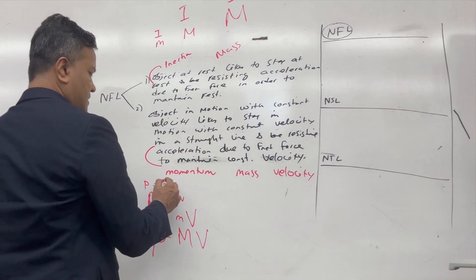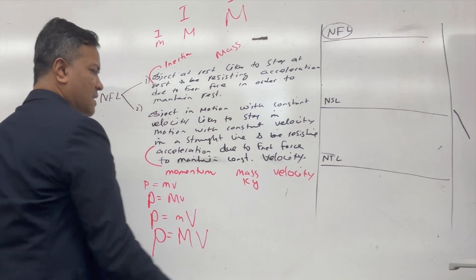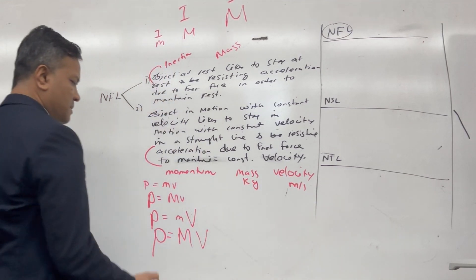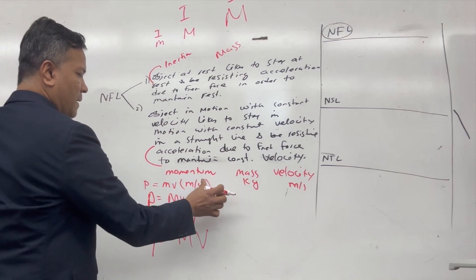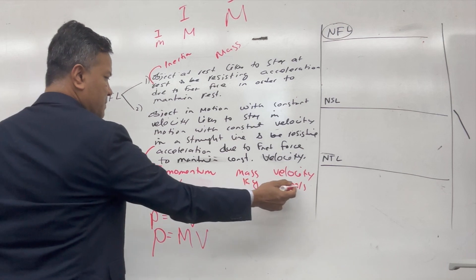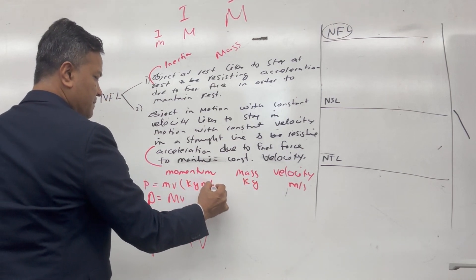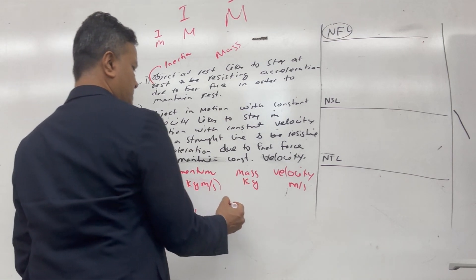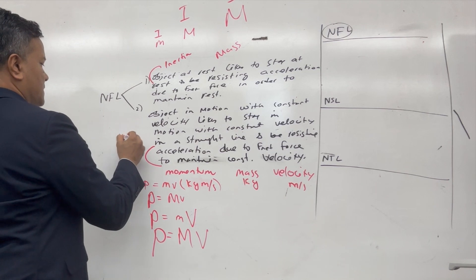Momentum has a unit. Mass has a unit of kilogram, velocity has a unit of meter per second. Therefore, momentum's unit is kilogram meter per second. Momentum is a vector quantity, so direction is important.